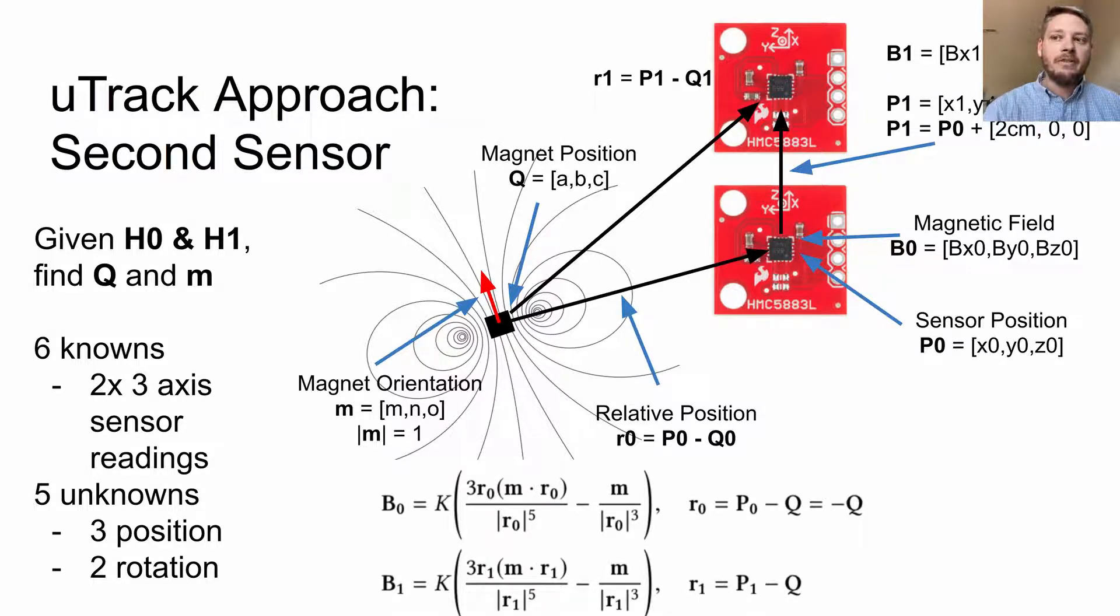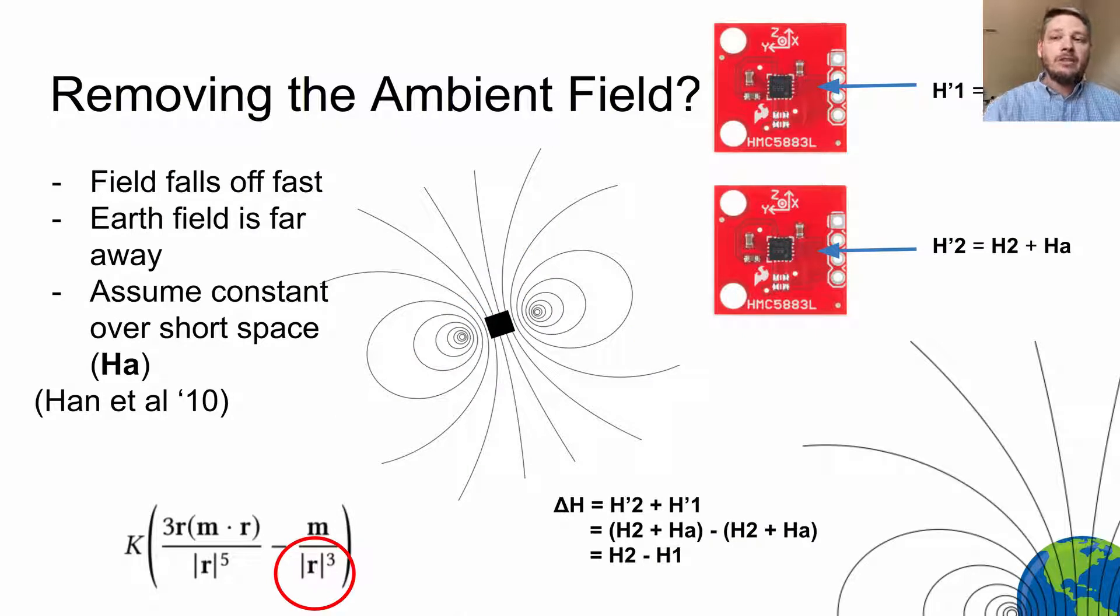The problem is we still have the ambient magnetic field. One insight is that Earth's field is far away and the magnetic field falls off very fast. Over a short distance, we can assume the magnetic field is constant. We can look at the difference between two sensor readings to eliminate the magnetic field. The problem is now we have a difference of readings, not absolute readings, so we can't use the equations on the previous slide.